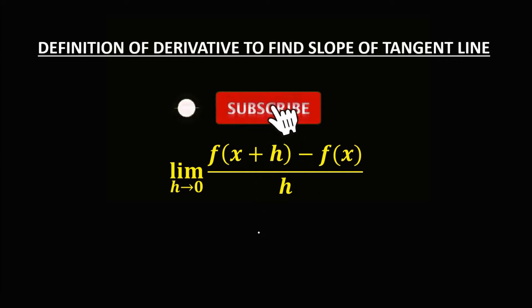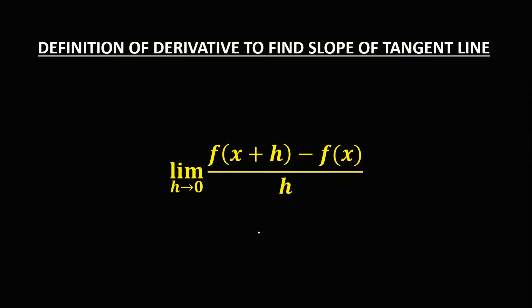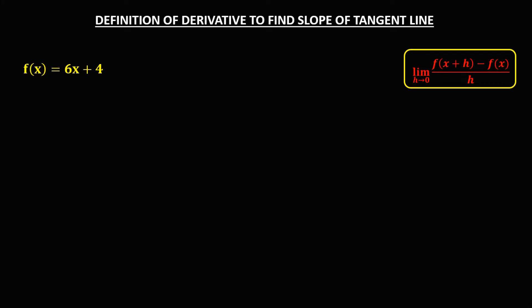Welcome to MathStoria. Today's topic is the definition of derivative to find the slope of a tangent line using this formula. We have this given, and we'll use the definition of derivative to find the slope of a tangent line from this given.